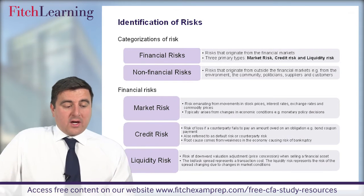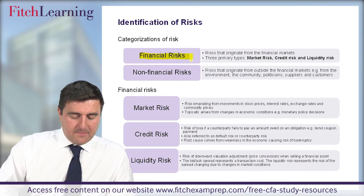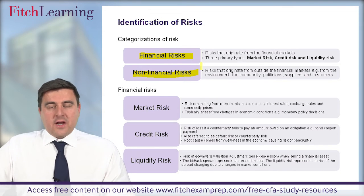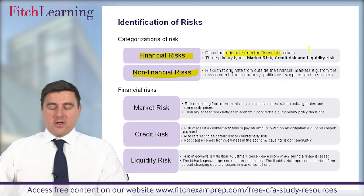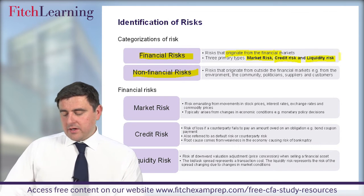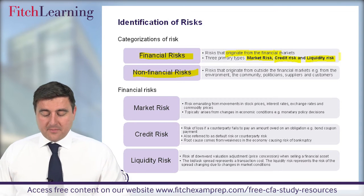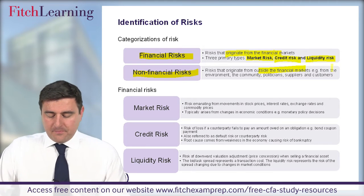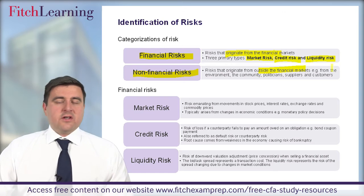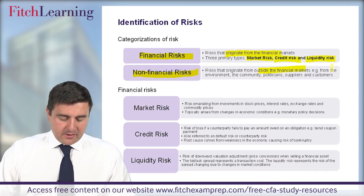Now we categorise risk. The first distinction is between financial risks and non-financial risks. Financial risks originate from the financial markets and are split into three parts: market risk, credit risk, and liquidity risk. Non-financial risks originate from outside the financial markets — from the environment, the community, political risk, suppliers, and customers — which can interlink to create additional risks the enterprise could be exposed to.